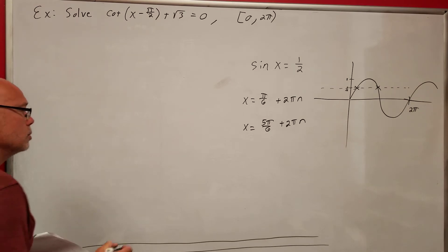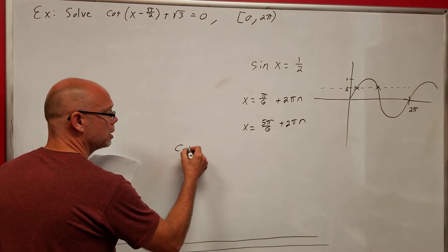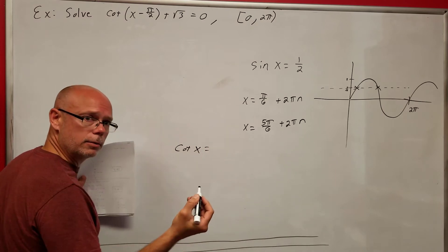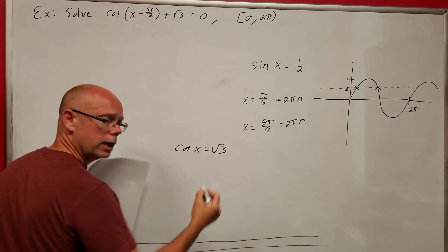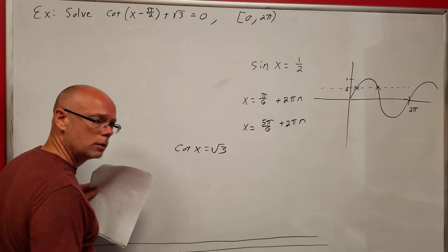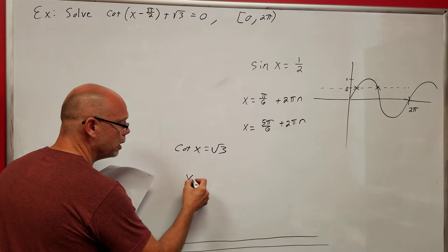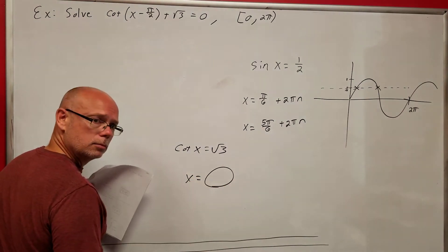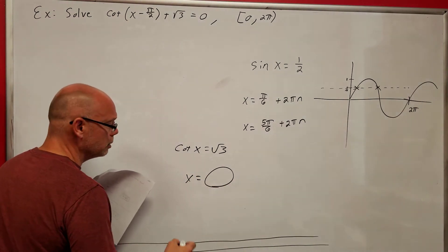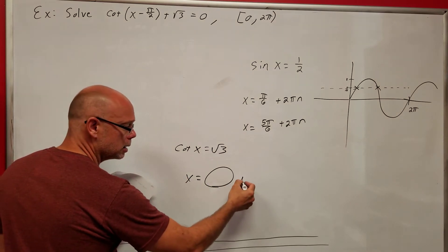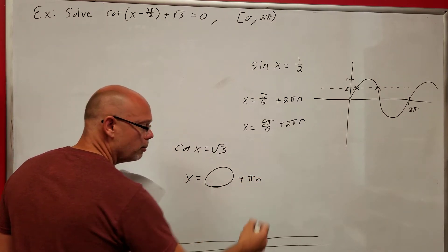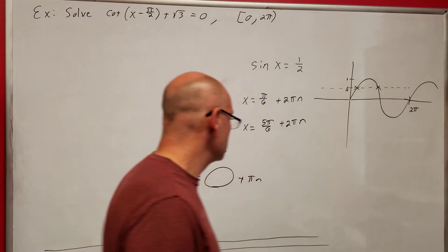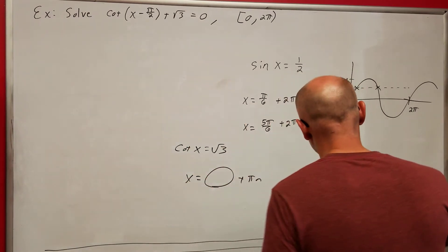Suppose I'm dealing with cotangent of x equals some number, like square root of 3. Whenever I solve this and find the value, I would add plus πn instead, because the period of cotangent is π.